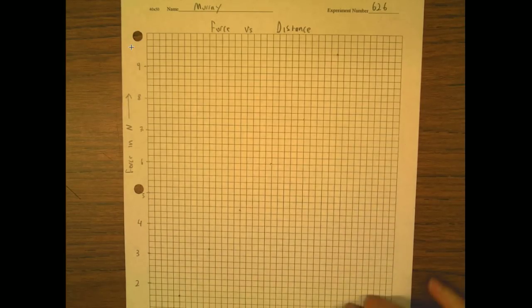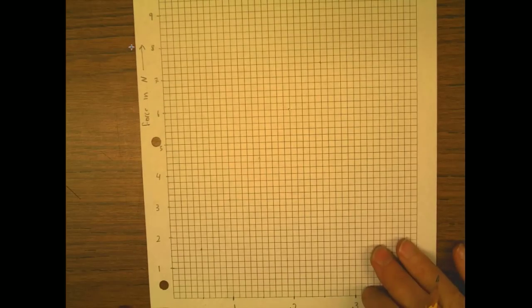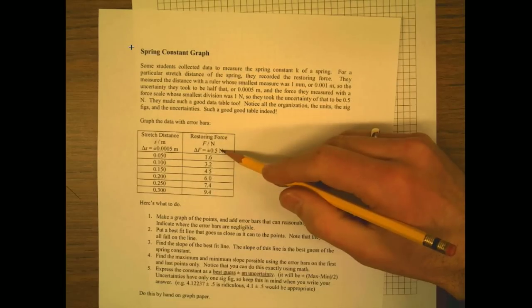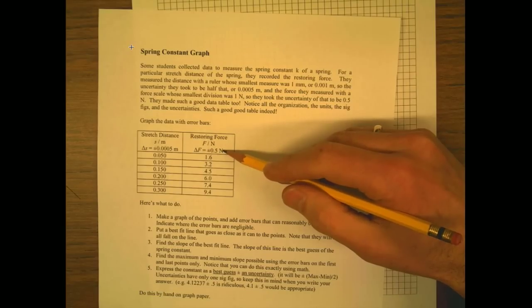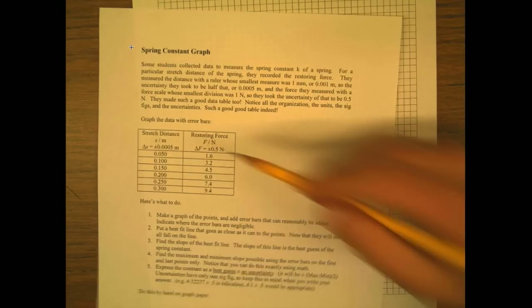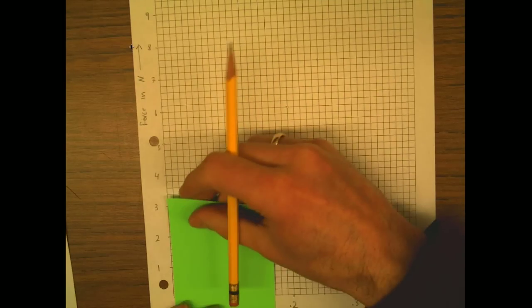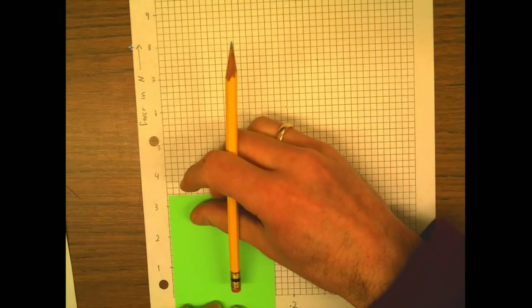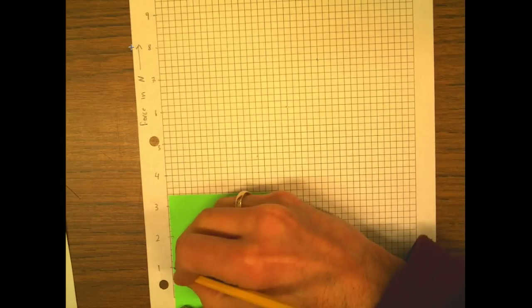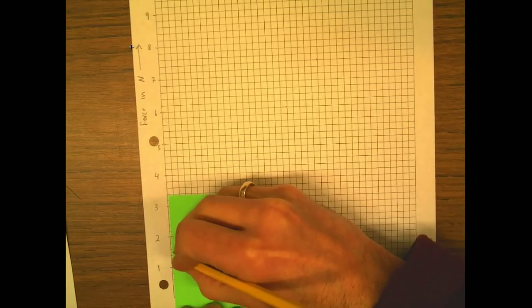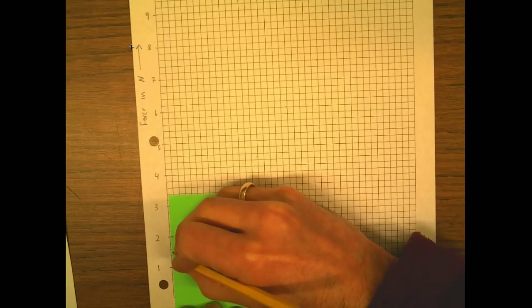Now there's a couple things we've got to do with this graph. The first thing is that we've got to put error bars on there. Notice that the error bars are half a Newton, plus or minus a half a Newton up and down. And so those are going to be nice and big. A whole Newton up and down, and a whole Newton is this big. So here's my little trick: I take another piece of paper and I make a little jig here. So that's how big my error bars are going to be, and the point is going to be right there in the middle.